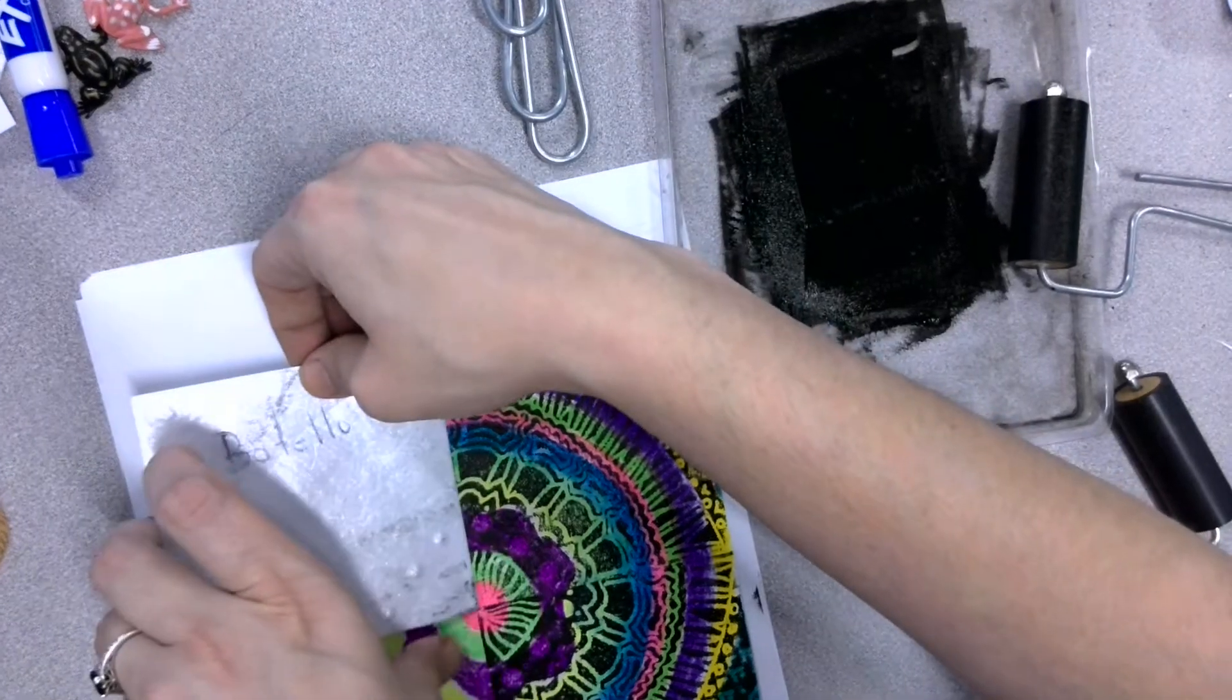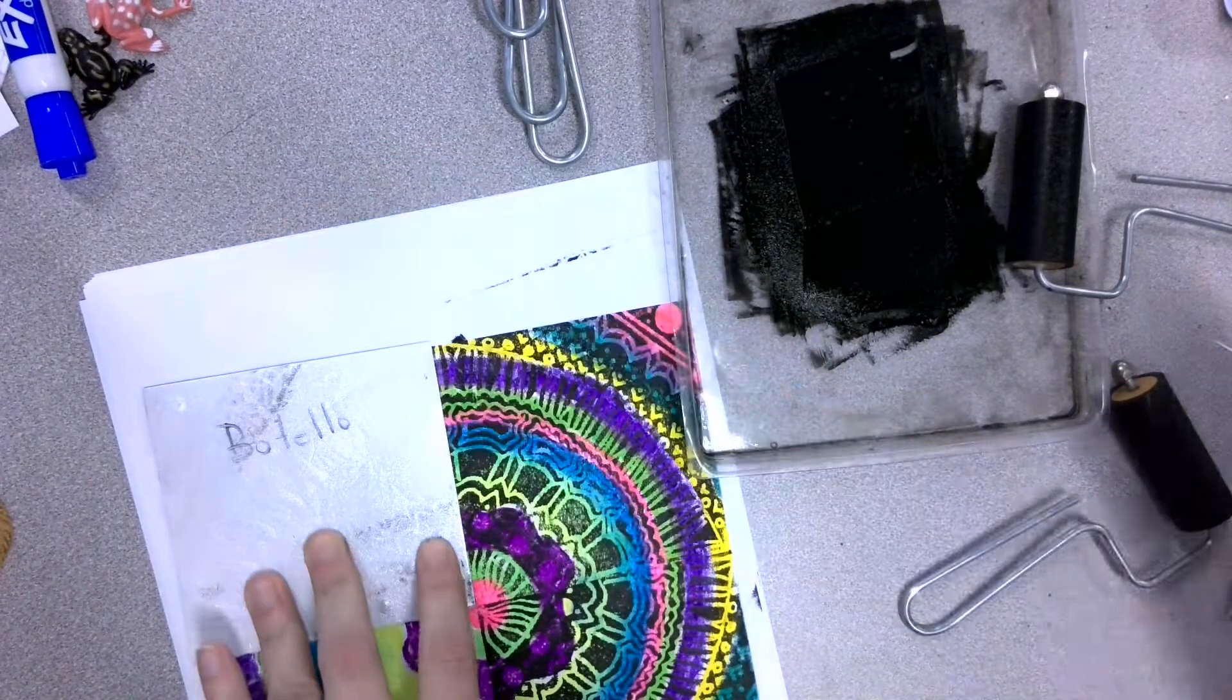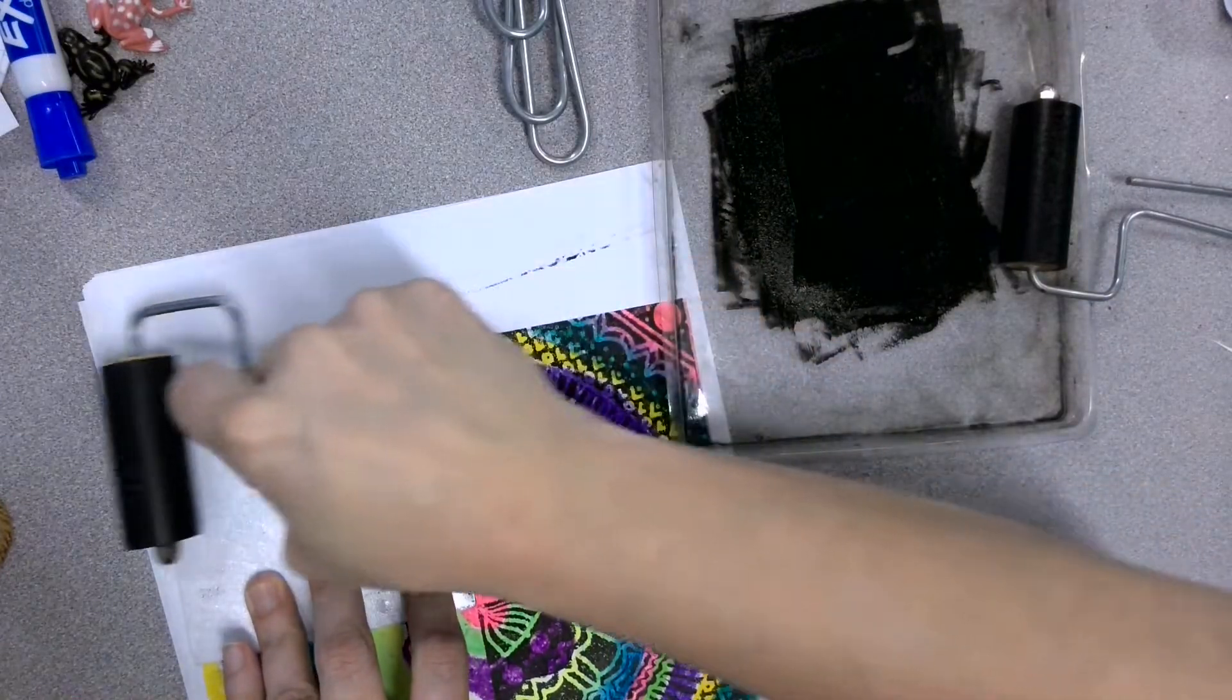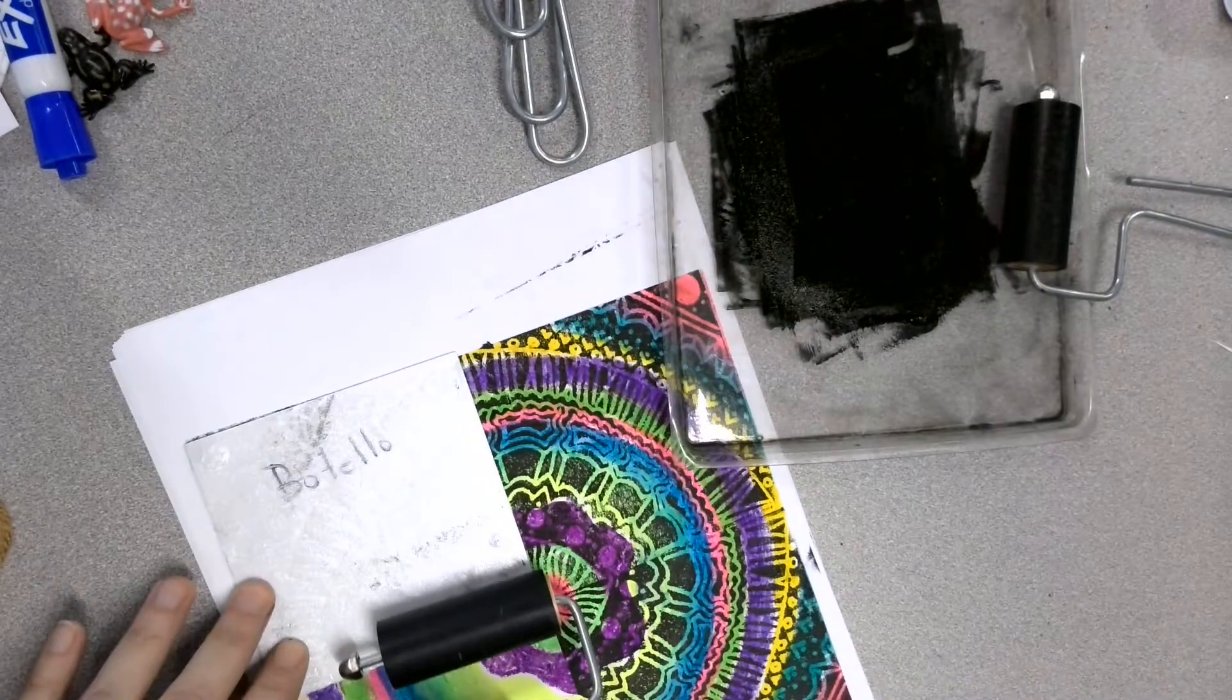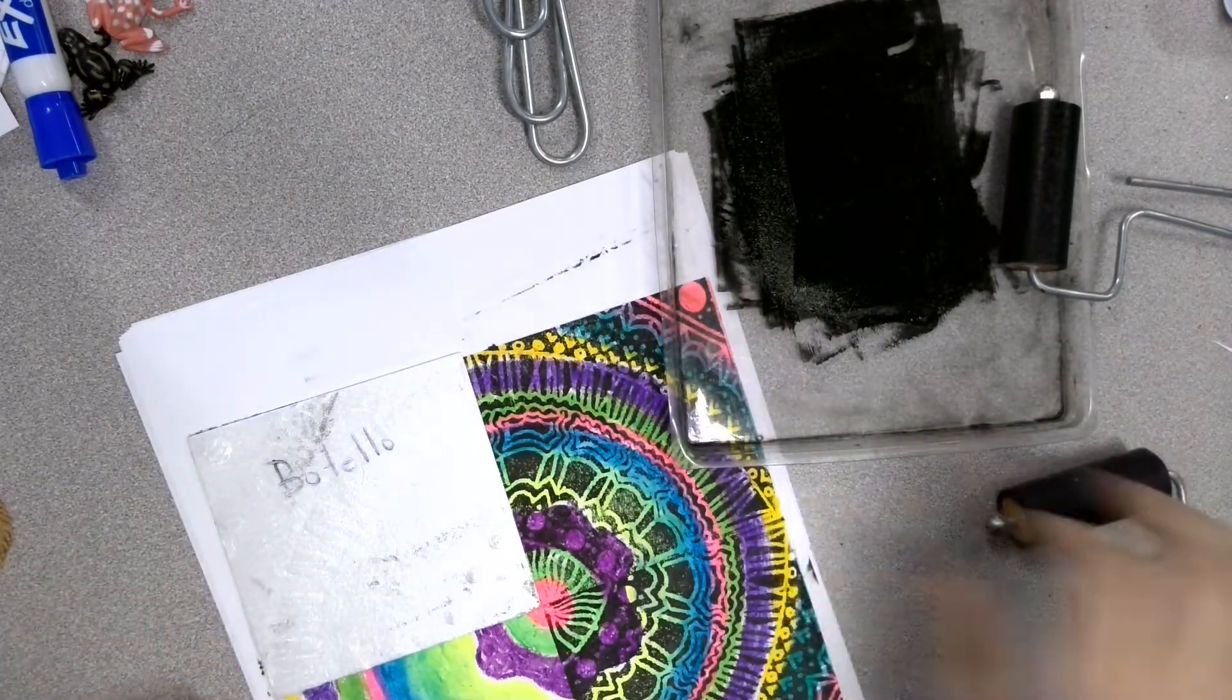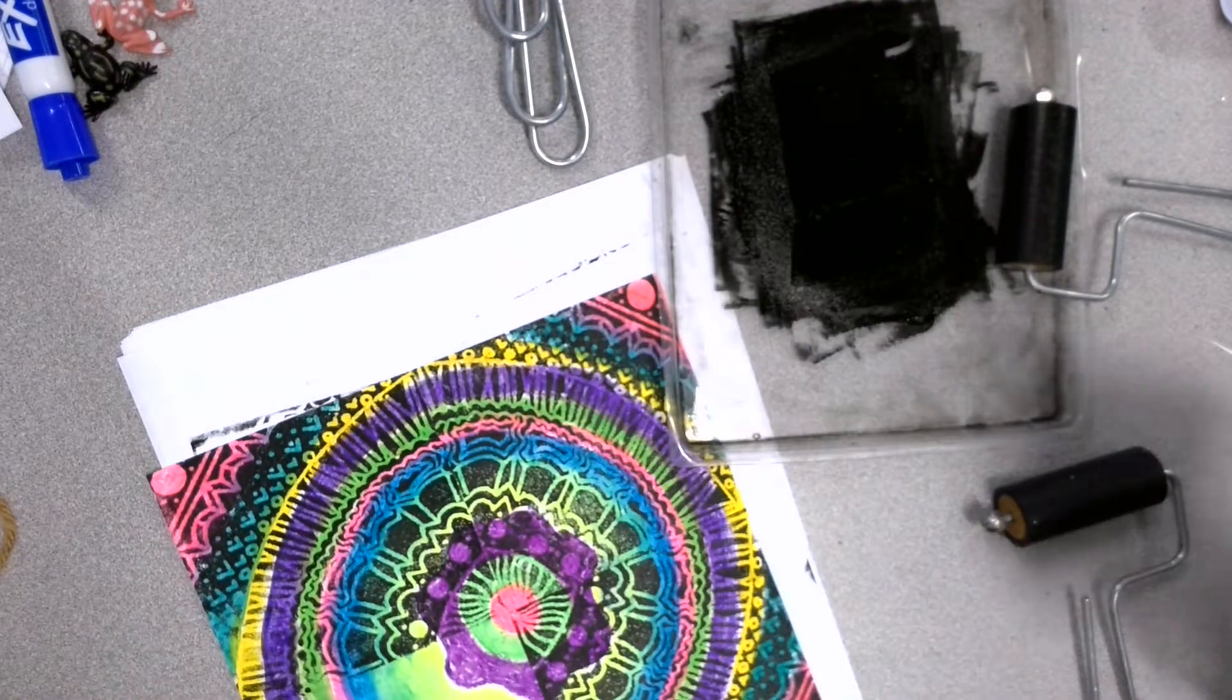I'm going to line it up with the edge here, and take the brayer that does not have ink on it. Put an even amount of pressure all the way through. I'm going to do it horizontally, vertically, and then pull. Pretty cool.